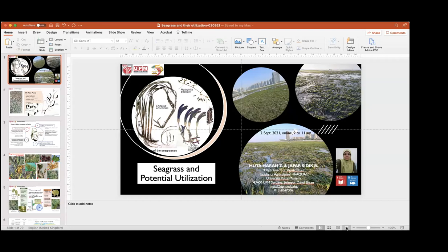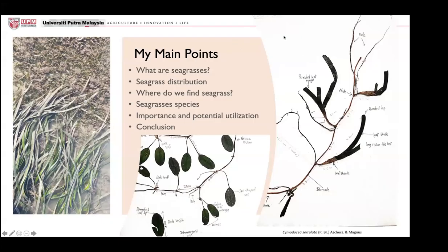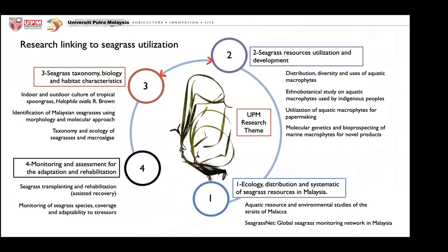The topic given to me is seagrass and potential utilization. My main points today: I want to tell you about seagrasses, their distributions, where we find seagrasses, and of course the 16 beautiful species. Then the importance and potential utilization of seagrass. People always ask what is the difference between seagrass and seaweed, so I hope after my presentation today everybody will be very clear, and more people can join in to study about the seagrass.